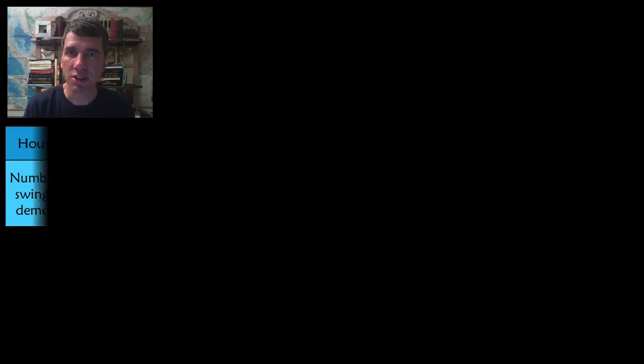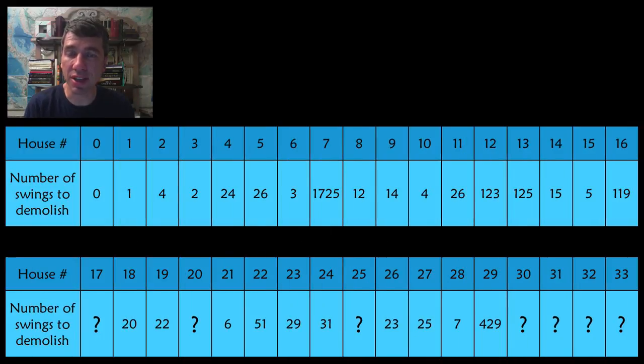Starting with house number 11, it's taken us 26 swings of the wrecking ball to destroy house number 0. Starting with different numbered houses, it takes us a different amount of time. For example, we've already seen that 9, if we started house number 9, that it took us 14 swings of that wrecking ball to destroy house number 0.